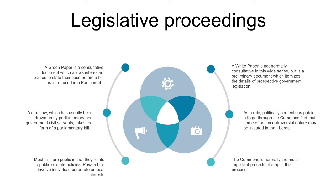After the royal signature has been added, the bill becomes an act of Parliament and is entered on the statute book as representing the law of the land at that time.